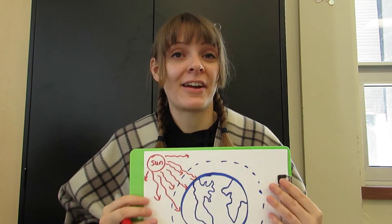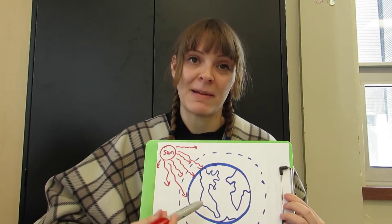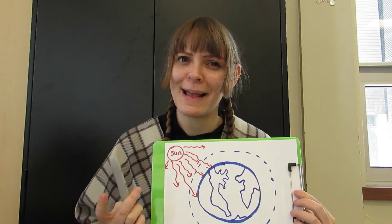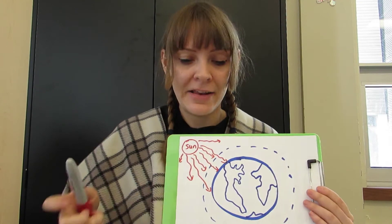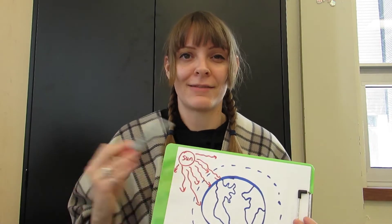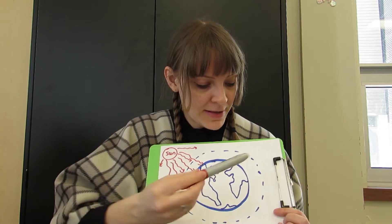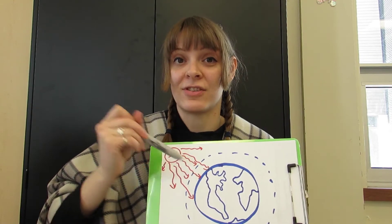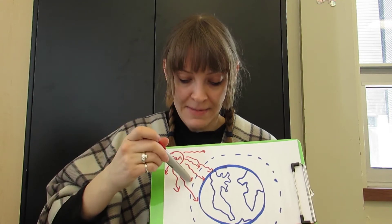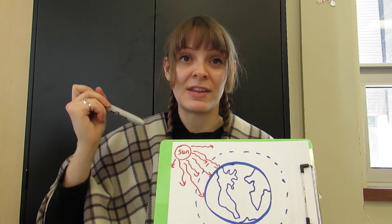Let's take a look at a diagram to explore the greenhouse effect. Here you can see I have my planet Earth — I know it's a wonky-looking planet but that's okay. You can see the Sun up in the corner. This dotted line around the Earth represents our atmosphere, and the Sun is emitting waves of radiation — this is light. Some of the rays get stopped by the atmosphere and some of them get through to the Earth's surface.